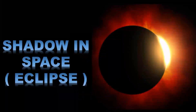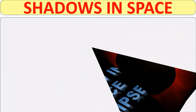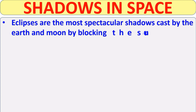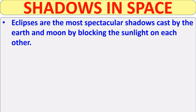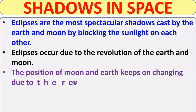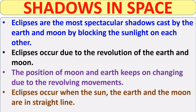Now we will see how shadows are formed in space. Eclipses are the most spectacular shadows cast by the earth and moon by blocking the sunlight on each other. Eclipses occur due to the revolution of the earth and the moon, and they occur when the sun, the earth, and the moon are in a straight line.